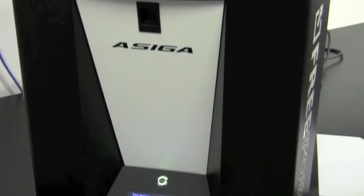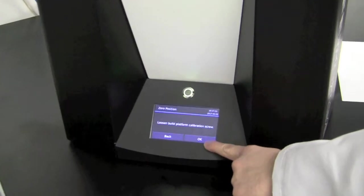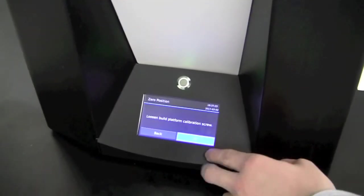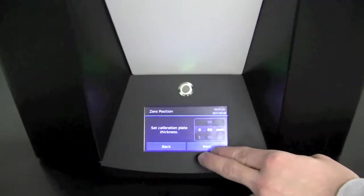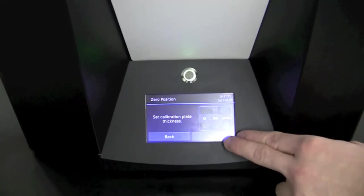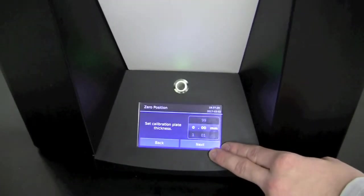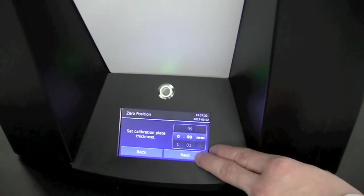After the calibration screw is loose, we'll simply go ahead and select OK. It's asking us to set a calibration plate thickness. We do not use a calibration plate for this model, so we'll select Next.